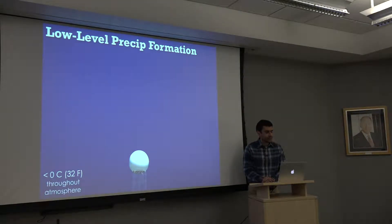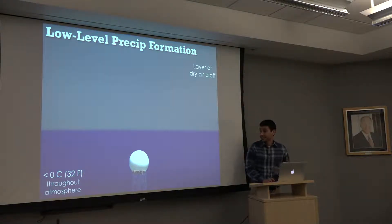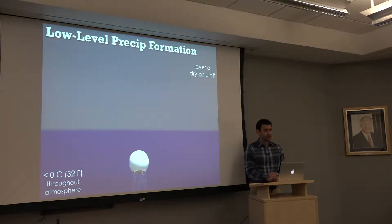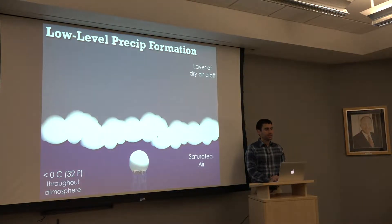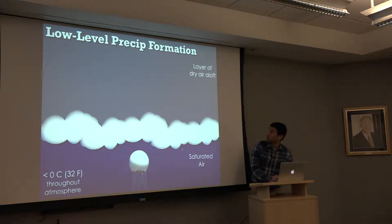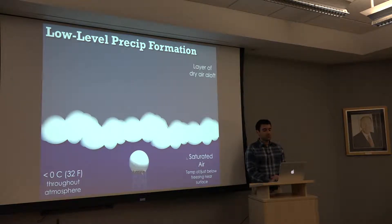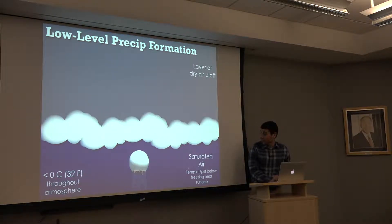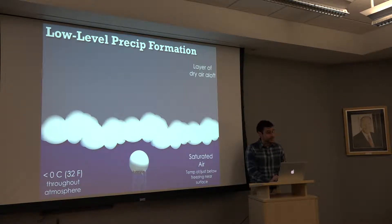Let's imagine a case where we're getting very light precipitation forming. Throughout the atmosphere we're dealing with temperatures that are sub-freezing — below zero degrees Celsius or 32 degrees Fahrenheit. We have a big layer of dry air aloft with no precipitation forming up top, but we're saturated down low with lots of clouds forming beneath that dry layer. The temperature is at or a few degrees below freezing through this more moist layer closer to the surface.